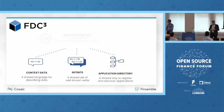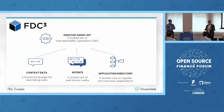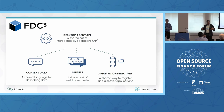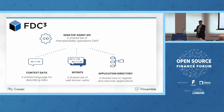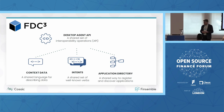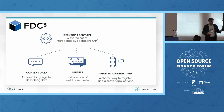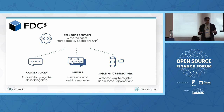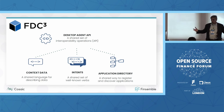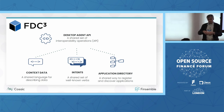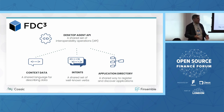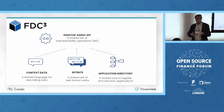So what is FDC3? Core components: context data — those are your nouns, the metadata you think about when describing a position or a person — that's what we transmit from one app to another. The intents are the actions, your verbs: I want to launch a chart, launch a chat, send a message. The application directory — we're all building multiple apps, so where do you find them? They need a standardized method of describing and discovering them, and ideally we'll have multiple app directories.